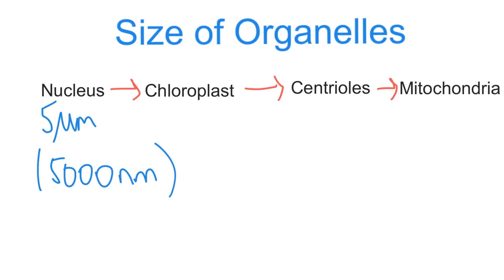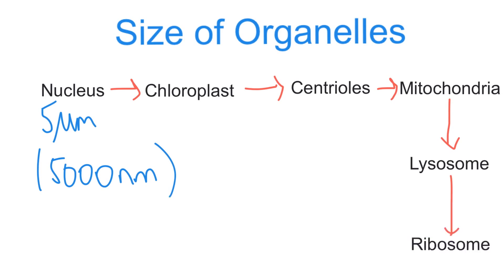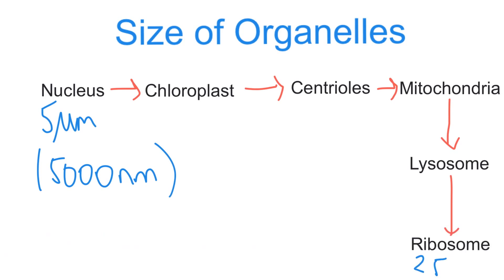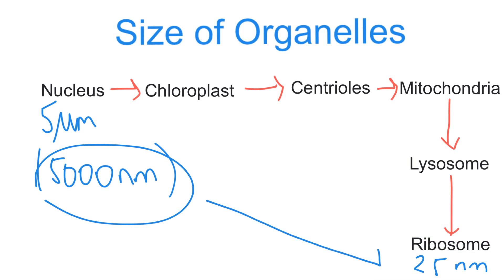You may think the endoplasmic reticulum or the Golgi body is larger than mitochondria, but since both do not have a fixed shape and are not single enclosed organelles, we can't really compare them — they're out of the question. So the next organelle is lysosome, and the smallest organelle is the ribosome, at 25 nanometers.